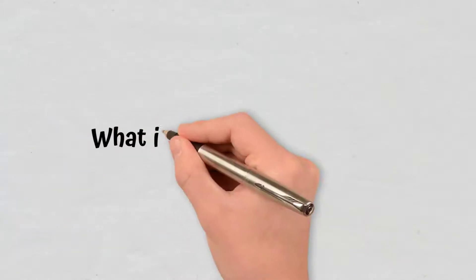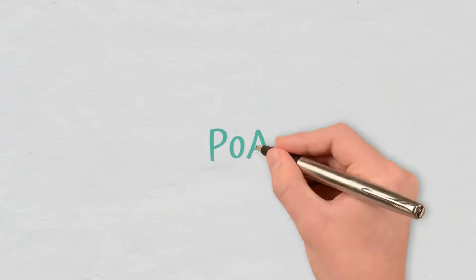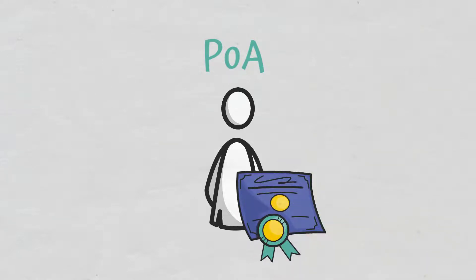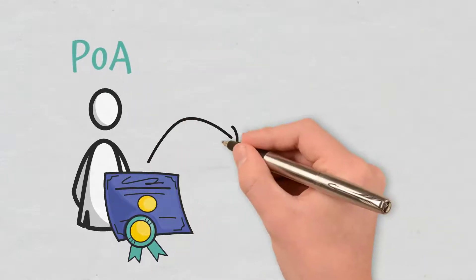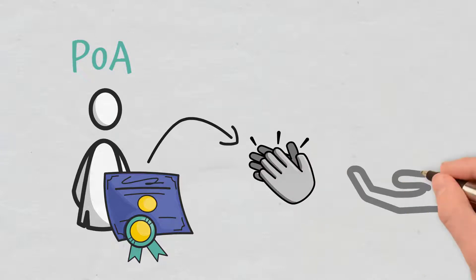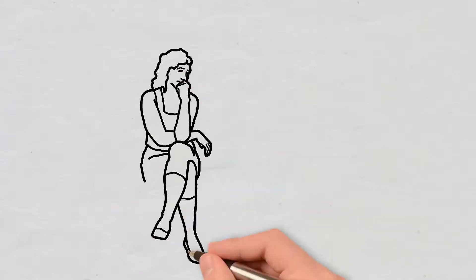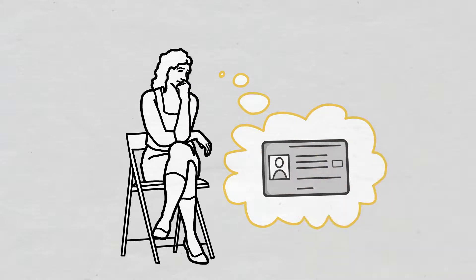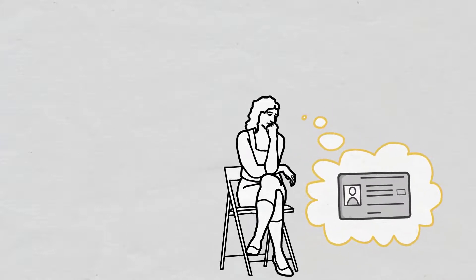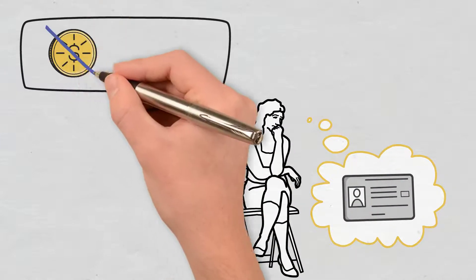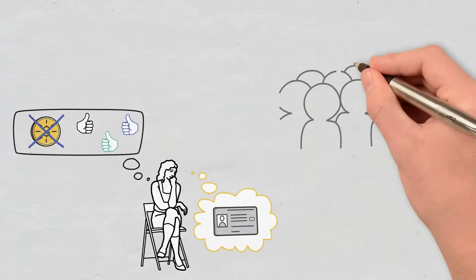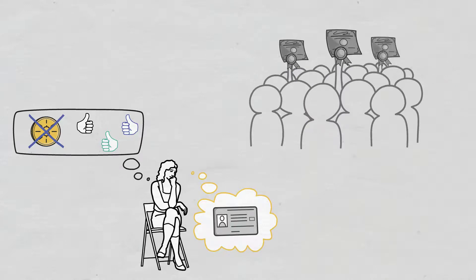What is Proof of Authority? Proof of Authority represents a consensus algorithm that is based on reputation, creating a practical and efficient solution for blockchain networks, especially when it comes to private ones. The main form of leverage in Proof of Authority is none other than a user's identity, meaning that a block validator isn't staking coins but their very own reputation. This means that Proof of Authority blockchains are secured by the validating nodes that are randomly chosen to serve as trustworthy entities.